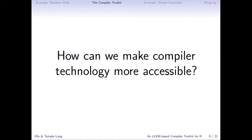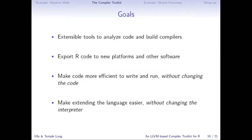What we're trying to do is build a toolkit for people to build compilers where you only have to write R code. You won't have to be deeply familiar with the hardware, and you won't have to learn a systems language like C or C++. Our goals include extensible tools for code analysis and building compilers — everything written in R as R packages. We want to export R code to new platforms like GPUs or other software. We also want to make code more efficient to run, and more efficient to write through things like automatic parallelization detection.